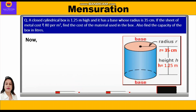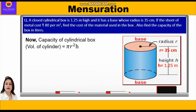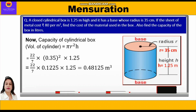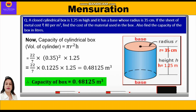Now we have to find the capacity of the cylindrical box, that is the volume of the cylinder. Using the formula πr²h, we substitute the values: (22/7) × (0.35)² × 1.25, which gives (22/7) × 0.1225 × 1.25, which equals 0.48125 meter cube. This is the capacity of the cylindrical box.